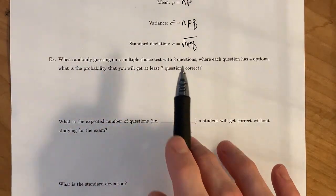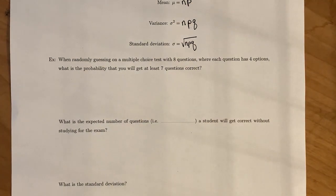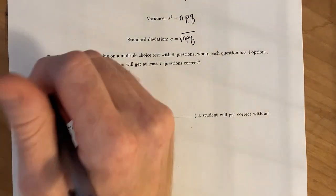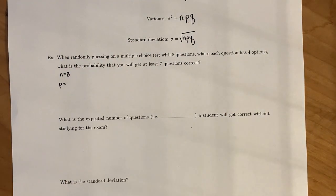When randomly guessing on a multiple choice test with 8 questions, where each question has 4 options, what is the probability that you will get at least 7 questions correct? We have to first figure out if this is a binomial distribution. So, is there a fixed number of trials? Well, there's only 8 questions. And so, yes, there's going to only be 8. What's the probability that just randomly guessing A, B, C, or D that you get an answer correct? Well, it's going to be 0.25. If you get question 1 correct, that will not impact if you get question 2 correct. And the probability of getting the second question correct is the same probability as getting the first one correct. And so, they're going to be independent.